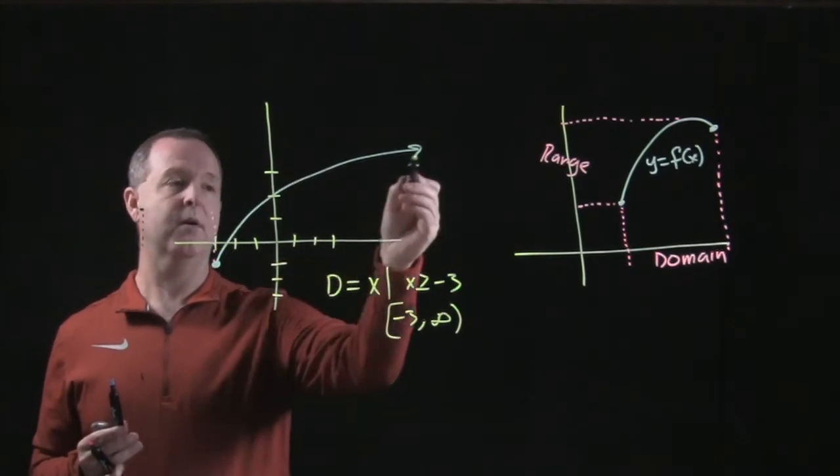Likewise with interval notation, the solution would read from negative 3 to infinity. I have a hard bracket around negative 3 because you notice I have a filled in circle at the beginning point, so that tells me that position is also a solution. And all my values continue on out towards infinity, as this arrow demonstrates that that graph will continue in that trajectory forever. So my endpoint is infinity, and we put a soft bracket around infinity.